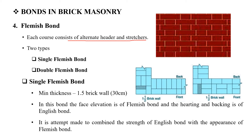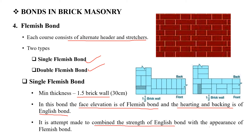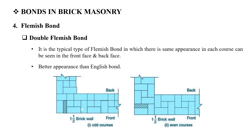We have the single Flemish bond and double Flemish bond. The minimum thickness of a single Flemish bond wall is 1.5 bricks, which is 30 centimetres. The single Flemish bond has a Flemish appearance on the front face and an English bond arrangement at the back. The double Flemish bond shows a Flemish pattern on both the front and back faces.